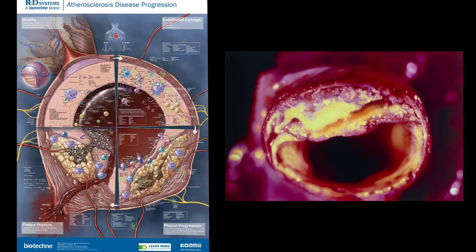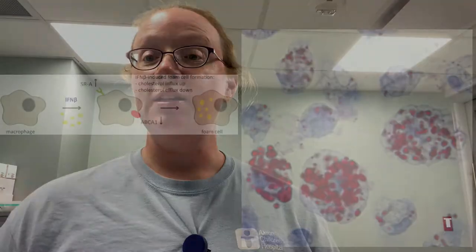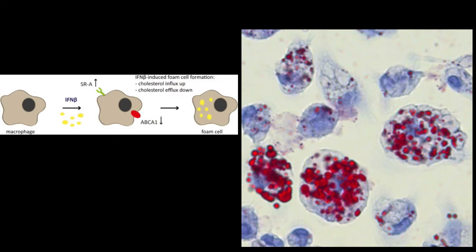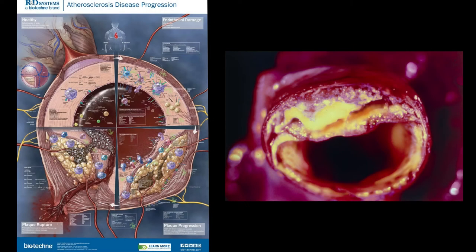Lipid particles and the immune system lead to inflammation in the vessel wall. Inflammatory cytokines, macrophages, lipids, and lipoproteins create foam cells. These foam cells are deposited on the arterial wall, and over time they damage the arterial wall — eventually forming this plaque as you can see on the slide.